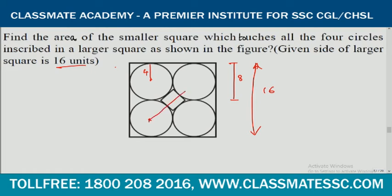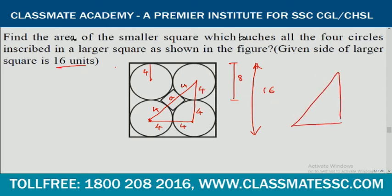Let us join these points, and consider the small square's side is A. The relevant lengths are radii of the circles. Drawing the right-angle triangle separately, we get two sides of 8 each, and the hypotenuse length of 4 plus 4 plus A, which is A plus 8. As it is an isosceles right-angle triangle, A plus 8 equals 8 root 2. Therefore, A equals 8 times (root 2 minus 1).